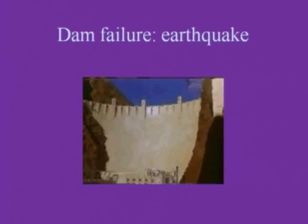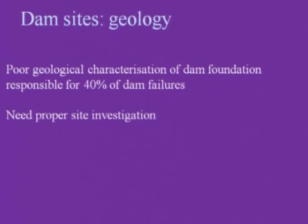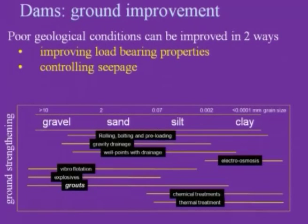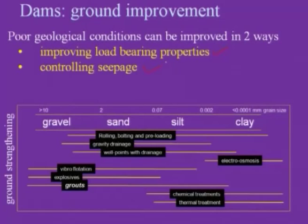A typical case of dam failure is caused by earthquake. Once the dam is constructed, another aspect is ground improvement techniques. Poor geological conditions can be improved in two ways: by improving load-bearing properties, or by controlling seepage. Soils are classified into four parts by grain size — gravel (greater than 10 mm), sand (2 mm), silt (0.002 mm), and clay (less than 0.001 mm).